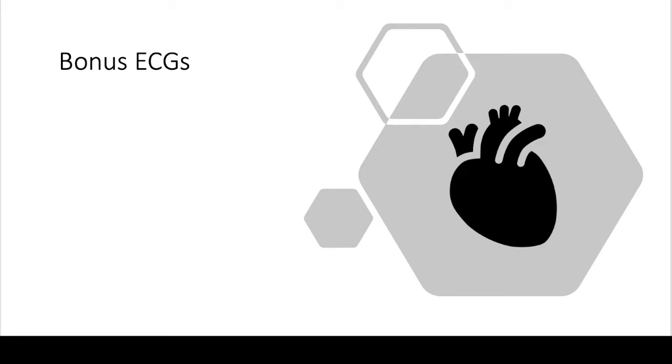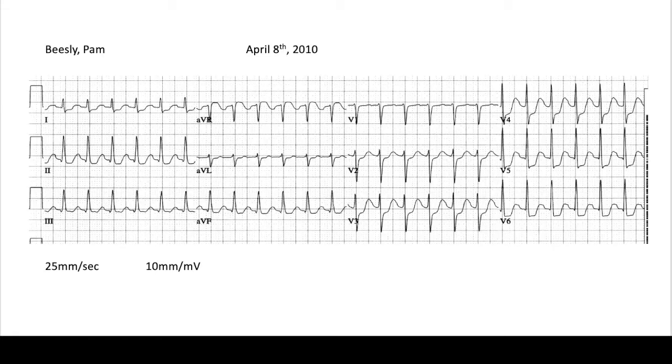What I want to do now is go through some example EKGs using the whole method that we have here, to show you how going through this method works, and also show you some other EKGs that are important to know that we haven't really covered yet. So let's start off with this first person. The first thing we do when we look at an EKG is name and date. We see the name, we see the date, then we quickly glance at the speed and gain — we see that those are normal — and then we can start looking at the EKG.